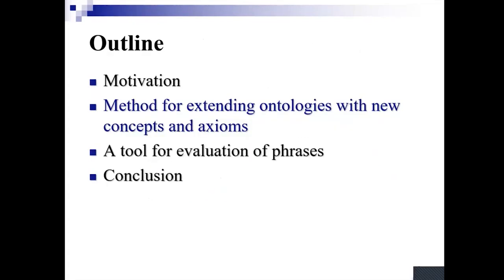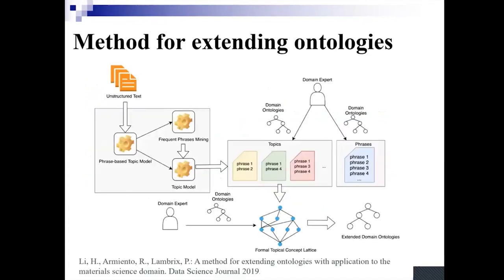In the remainder of this talk, I will introduce a method to find new concepts and axioms to be able to make an ontology more complete. Our proposed method has two parts. In the first part, we use unstructured text — for instance, research articles — as an input, and as an output we receive a list of frequent phrases as well as topics, which a domain expert then needs to validate. In the second part, we try to find additional axioms using formal concept analysis. Let's look a bit closer at these two parts.